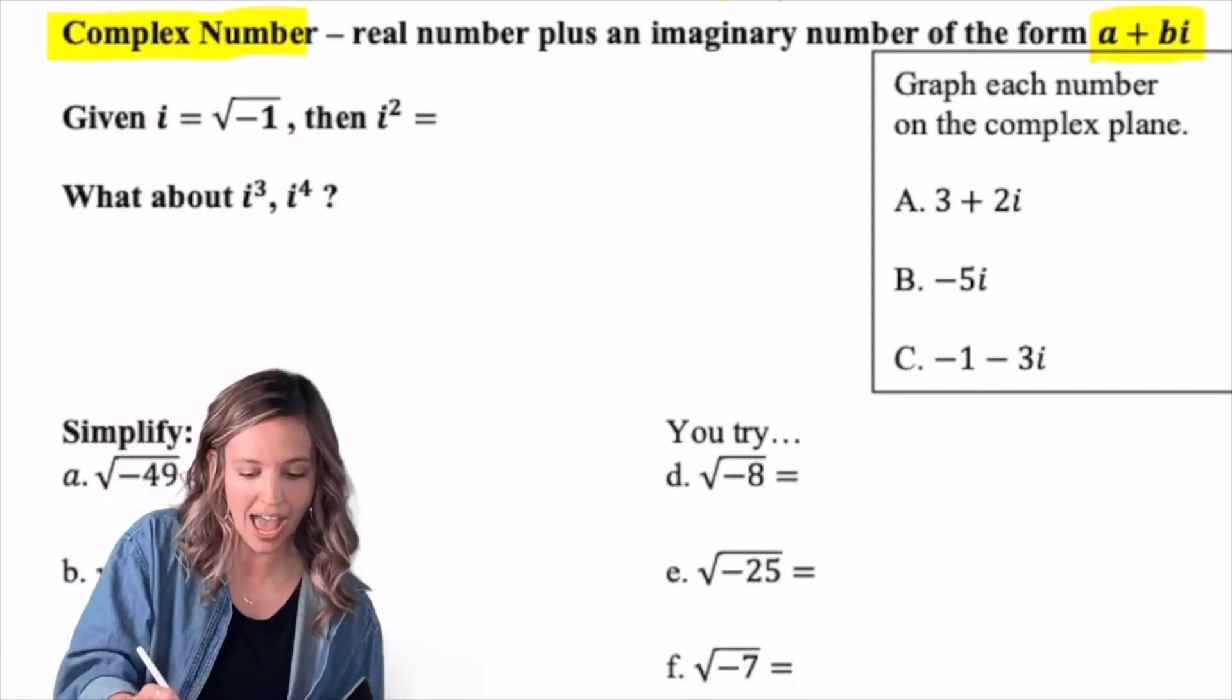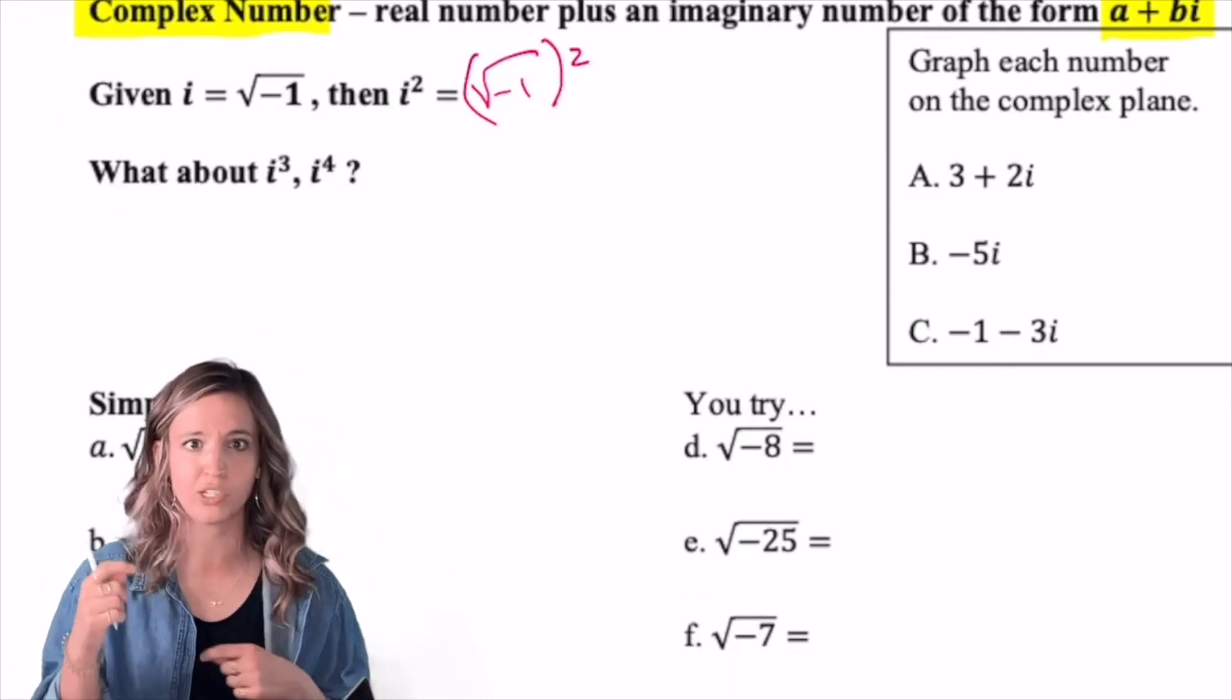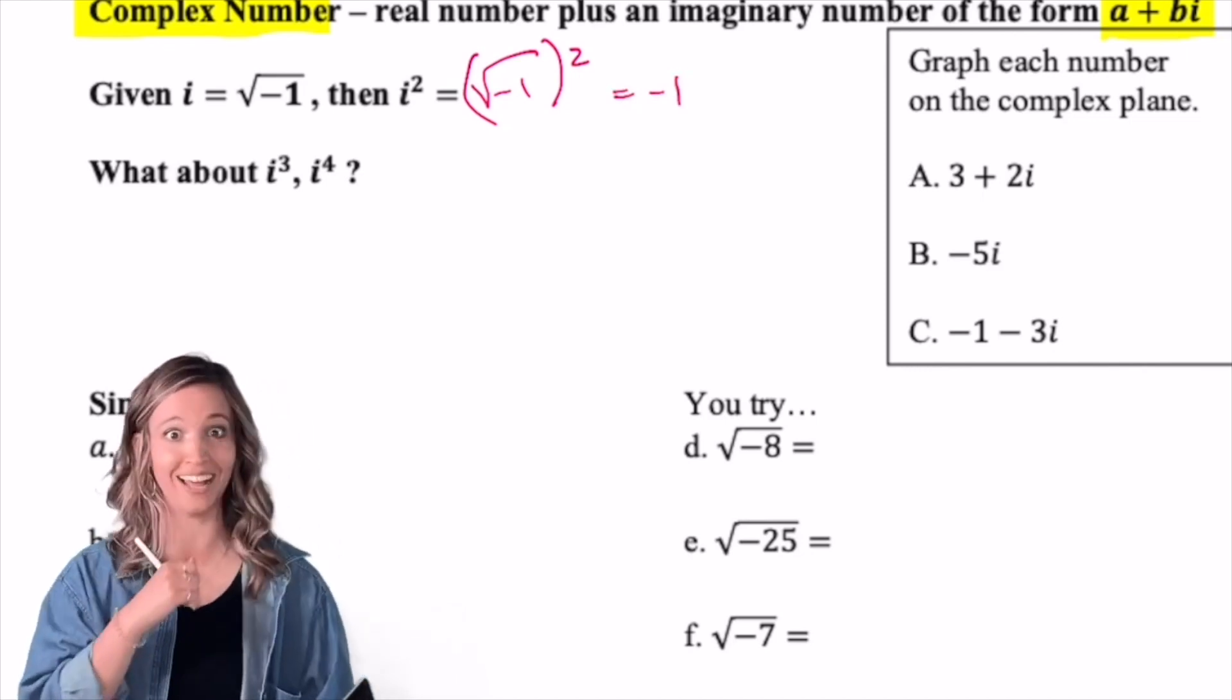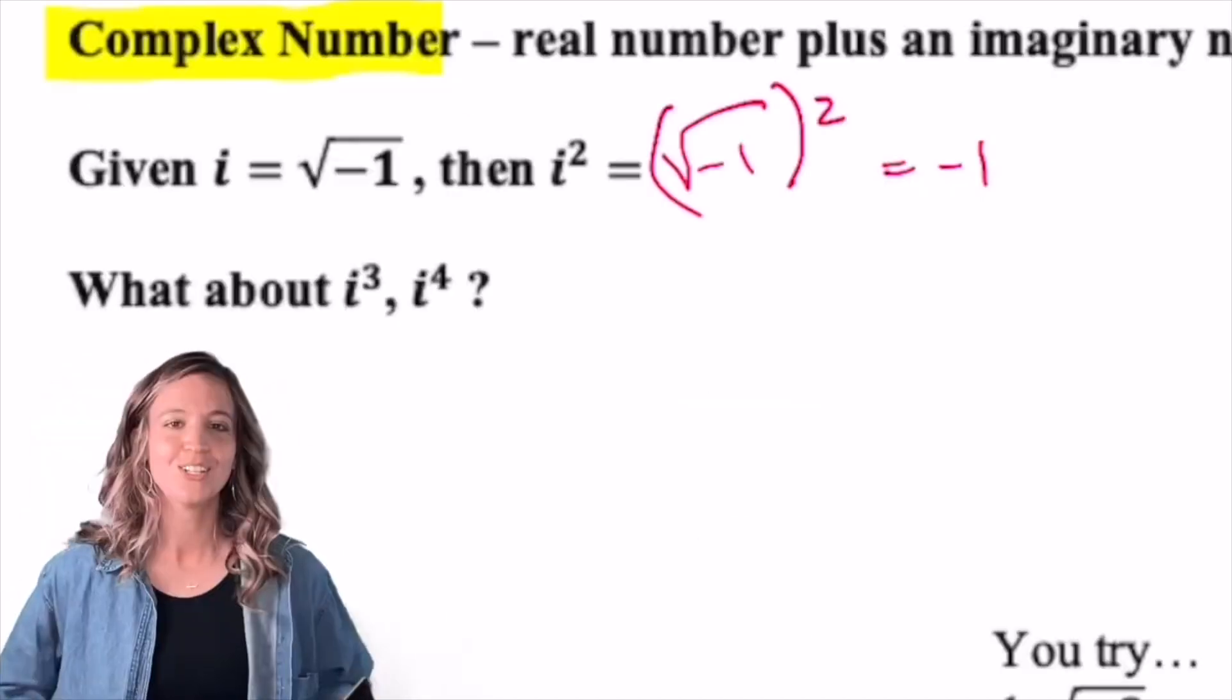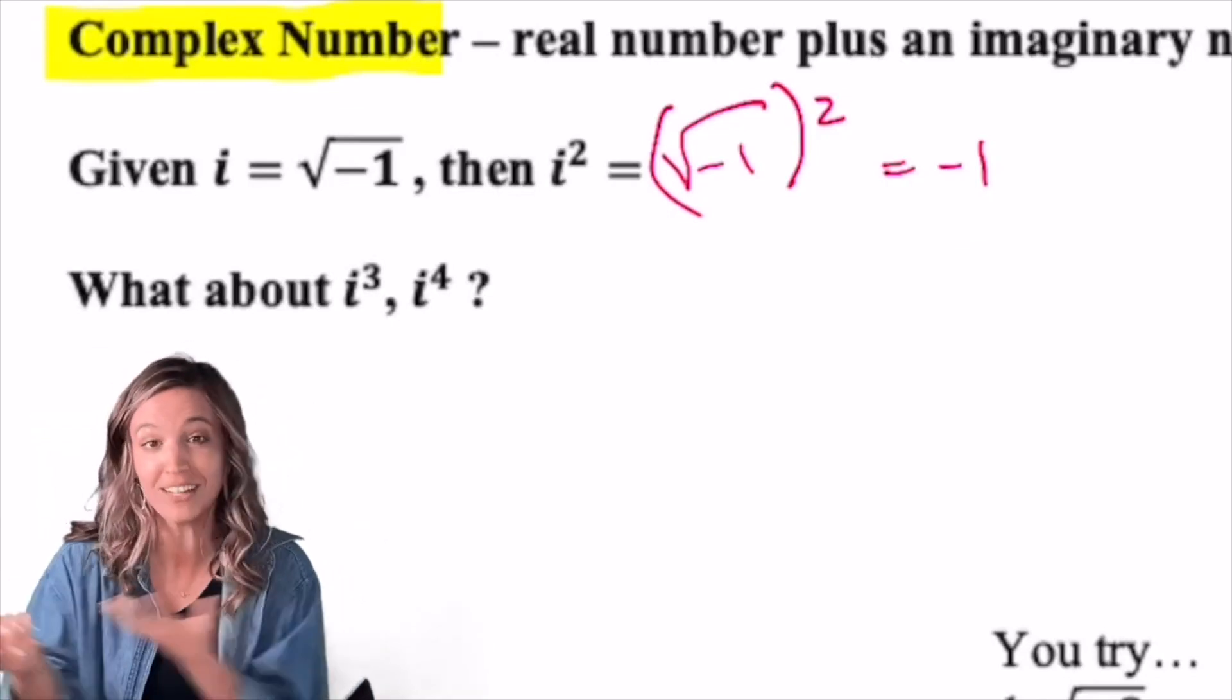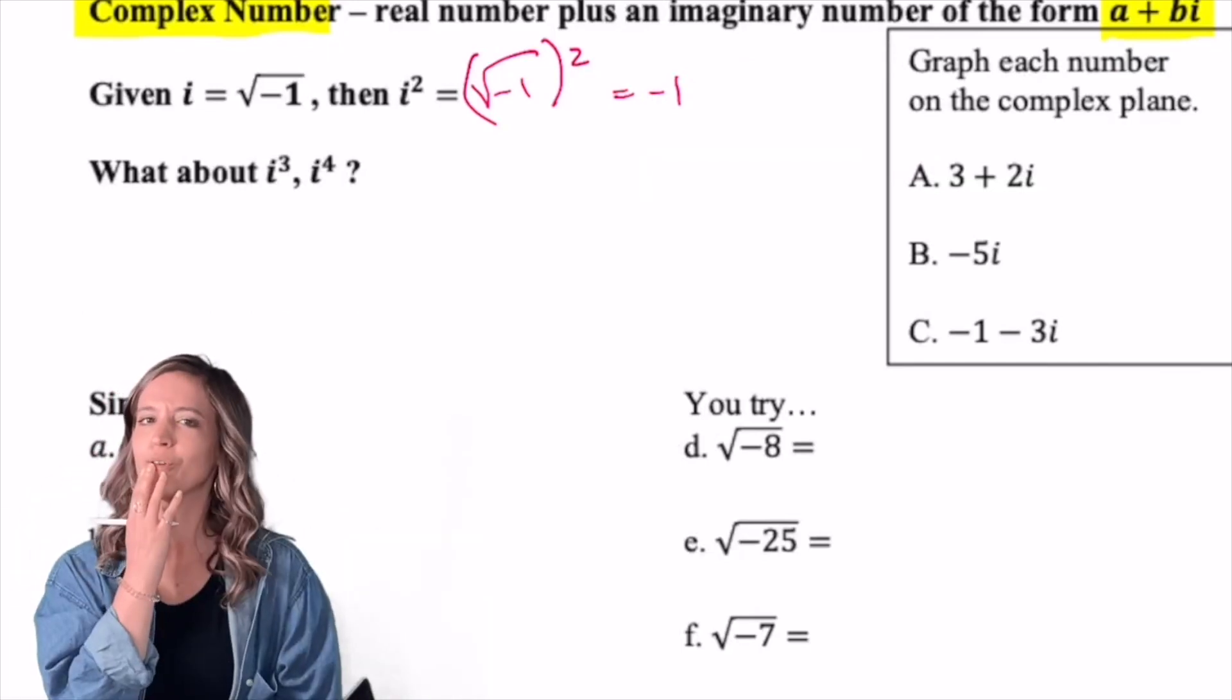Well, if i is the square root of negative one and I want to square it, a square and a square root undo each other. So it's negative one. Oh, that just got real! So i is an imaginary number, but i squared is just negative one. So it's a real number. So then what about i cubed and i to the fourth? Take a moment. Consider those two.